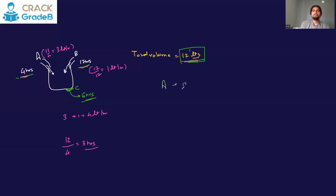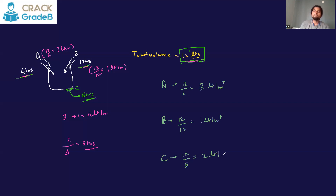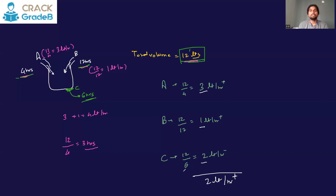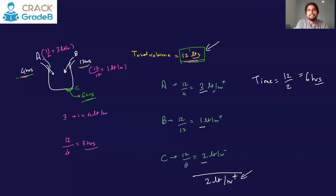Pipe A fills at 3 liters per hour; pipe B fills at 1 liter per hour; pipe C empties 12 liters in 6 hours, so it empties at 2 liters per hour. Resultantly, in 1 hour: A fills 3, B fills 1, C empties 2 — net fill rate = 3 + 1 − 2 = 2 liters per hour. To fill 12 liters at 2 liters per hour requires 6 hours.